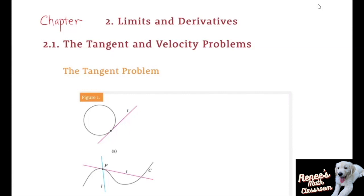The word tangent was derived from the Latin word 'tangens,' which means touching. So a tangent to a curve is a line that touches the curve. In other words, a tangent line should have the same direction as the curve at the point of contact.